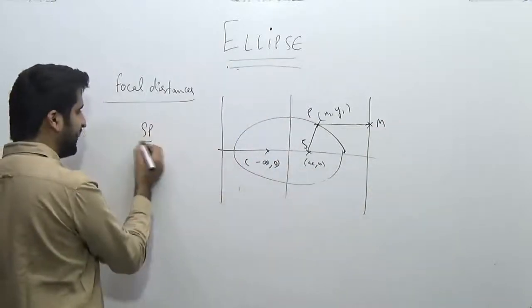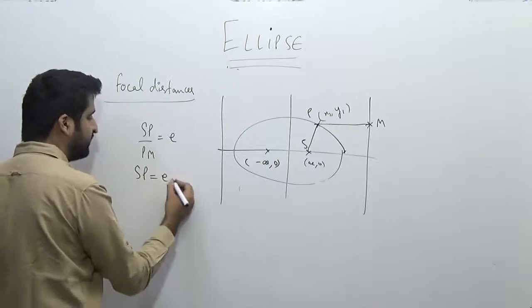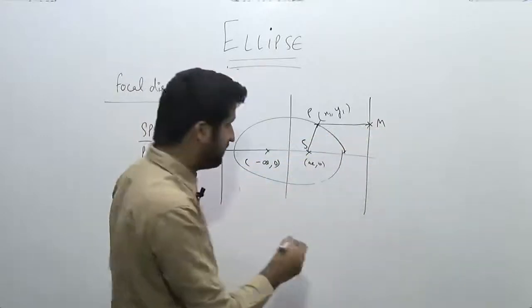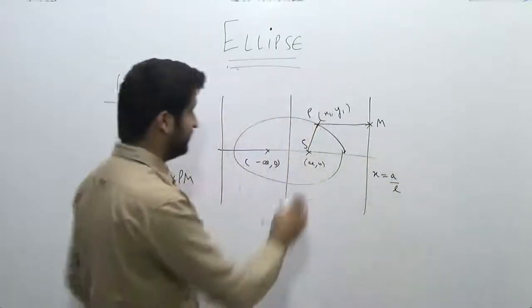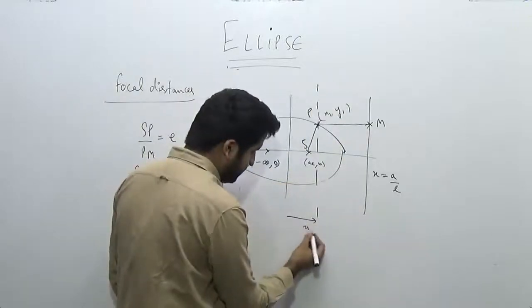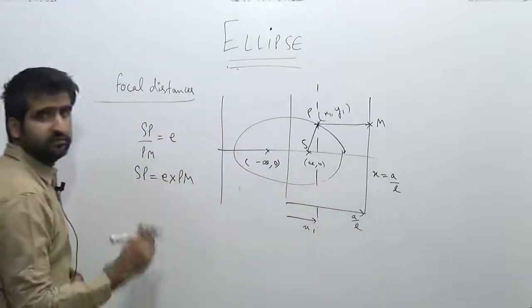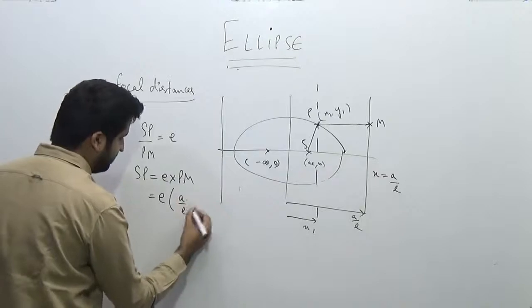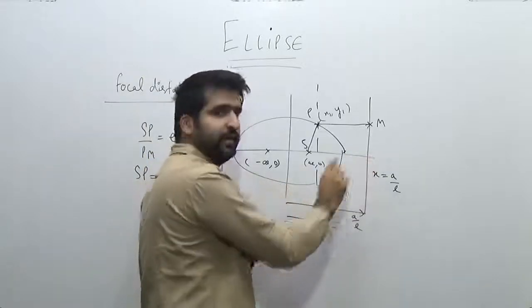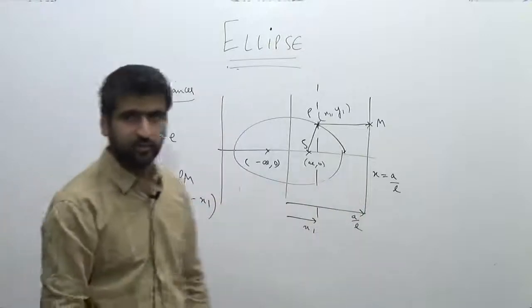The shortcut is: you know that the ratio SP upon PM is always equal to e. So if you want to find the focal distance, you can find the product of e and PM. The product of e and the distance from the directrix will give you the focal distance. The directrix equation is x = a/e, so the distance of this point from x = a/e can be easily seen. The x-coordinate of the point is x₁ and the directrix is at a/e, so the distance PM comes out to be a/e minus x₁.